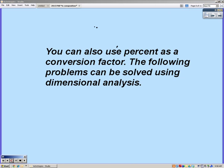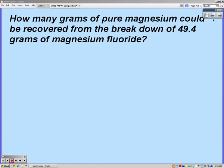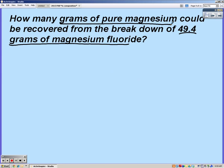You can also use percent as a conversion factor. These following problems we're going to use dimensional analysis. It says how many grams of pure magnesium could be recovered from the breakdown of 49.4 grams of magnesium fluoride? Notice we're starting with grams of magnesium fluoride and we're ending with grams of magnesium, so we're starting and ending with two different substances and they're both grams.